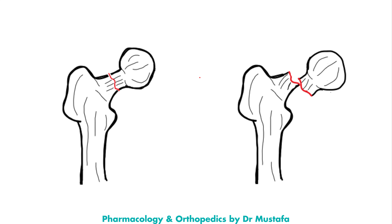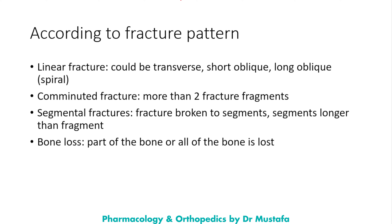As an example, here we have a complete fracture that is also undisplaced because the bones are still aligned and in the same plane. In contrast, here we have a complete fracture where displacement is happening between the bone fragments.